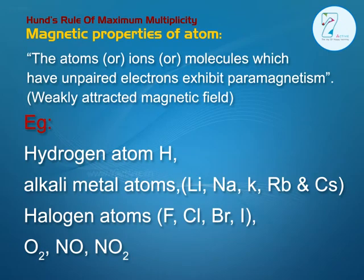Magnetic properties of atoms: The atoms, ions, or molecules which have unpaired electrons exhibit paramagnetism, which means weakly attracted by magnetic field. Examples: hydrogen atom H, alkali metal atoms lithium, sodium, potassium, rubidium, cesium, halogen atoms fluorine, chlorine, iodine, oxygen NO and O2.